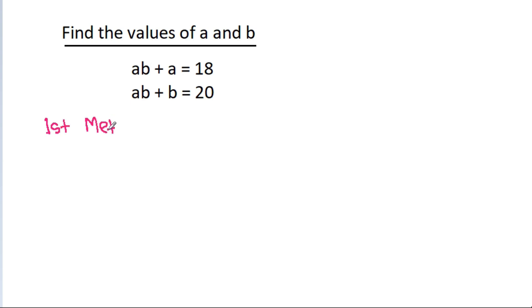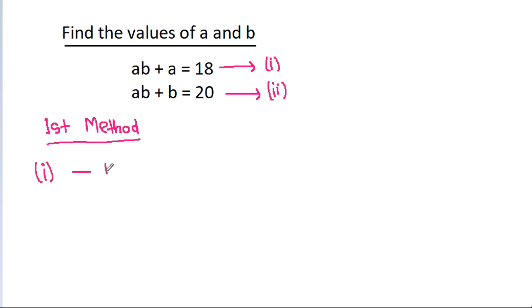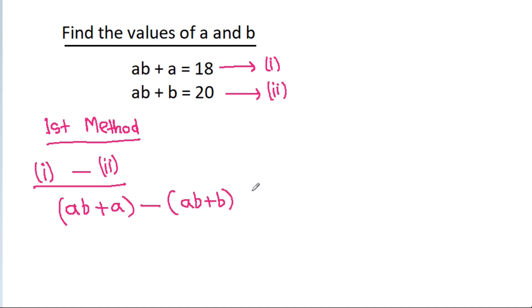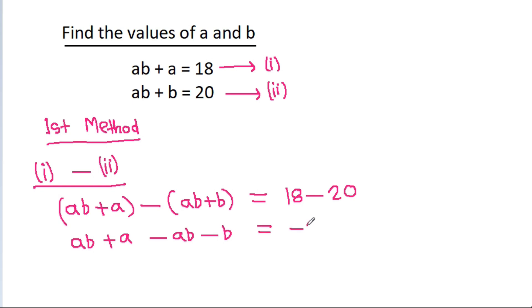Suppose equation 1 is ab + a = 18 and equation 2 is ab + b = 20. If we subtract equation 2 from equation 1, then ab + a minus ab + b is equal to 18 minus 20. The ab terms cancel, so a minus b is equal to minus 2.